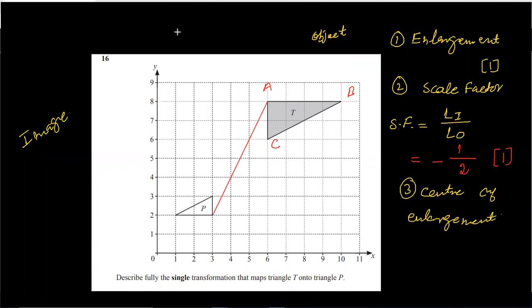Then find their corresponding points and join them. The corresponding point of A is this, that will be A prime. Similarly, the corresponding point of B is this, that is B prime. The corresponding point of C is this, that is C prime.